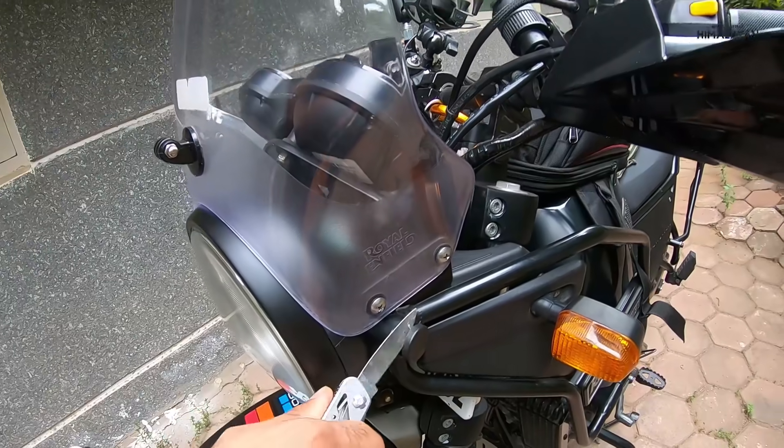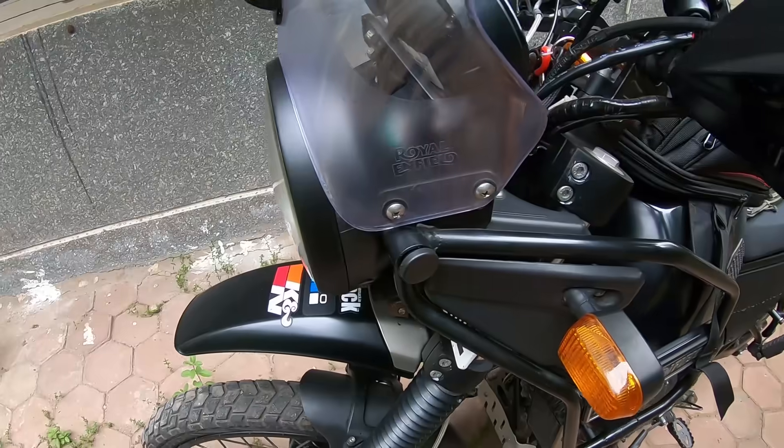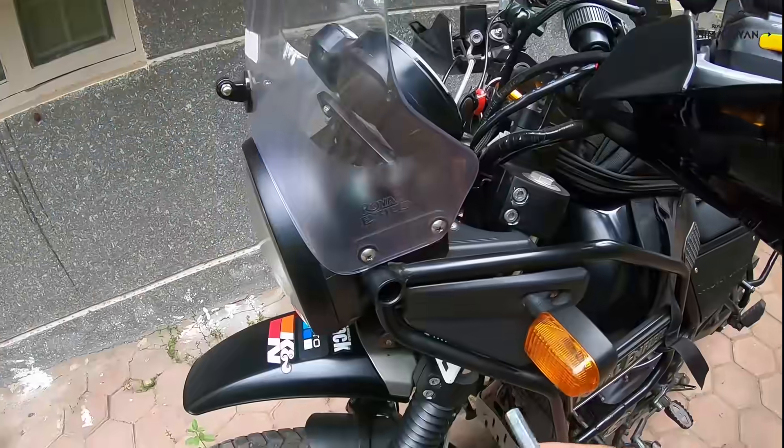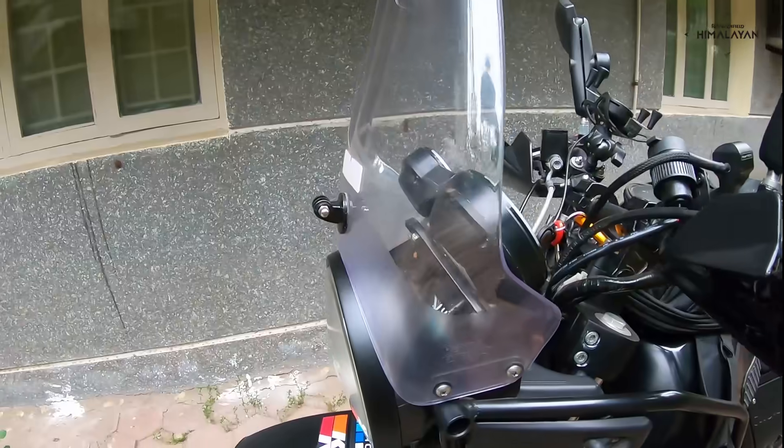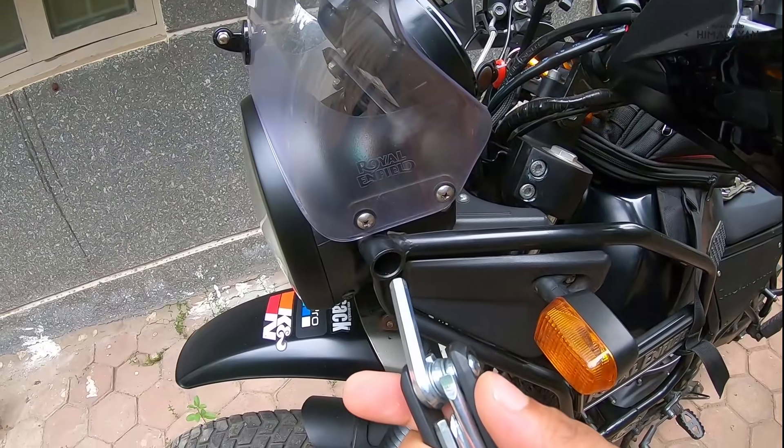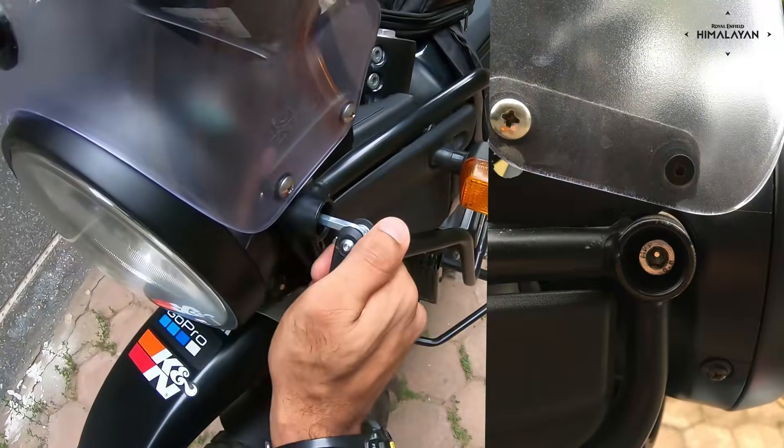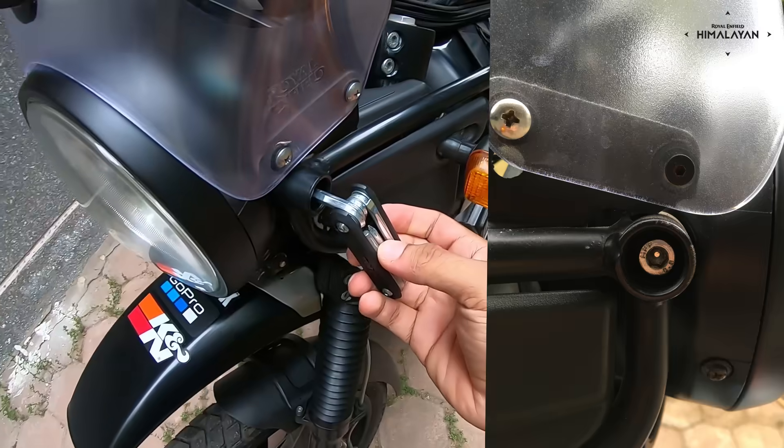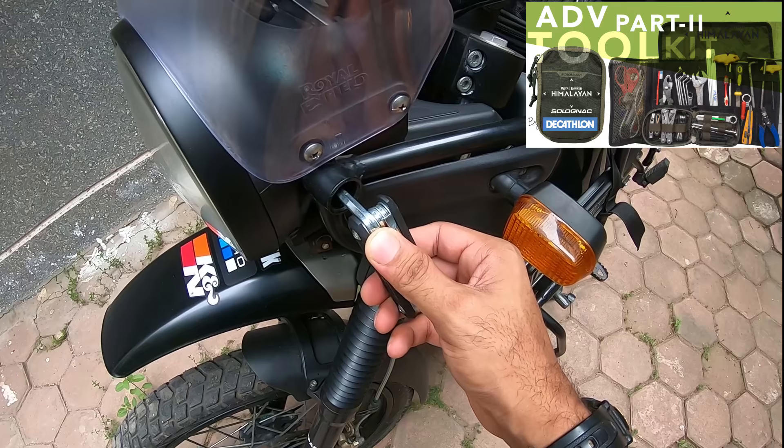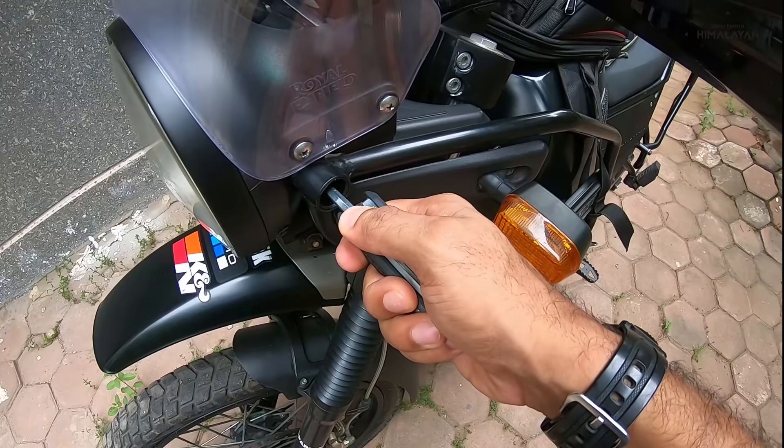Shove this in, just move it like that and pull it out. Next, what you have to do is run a number six Allen key into the socket. If you want to know about the tools I'm using, kindly check the video I've made on my toolkits. There's a detailed description of all the tools that I possess.